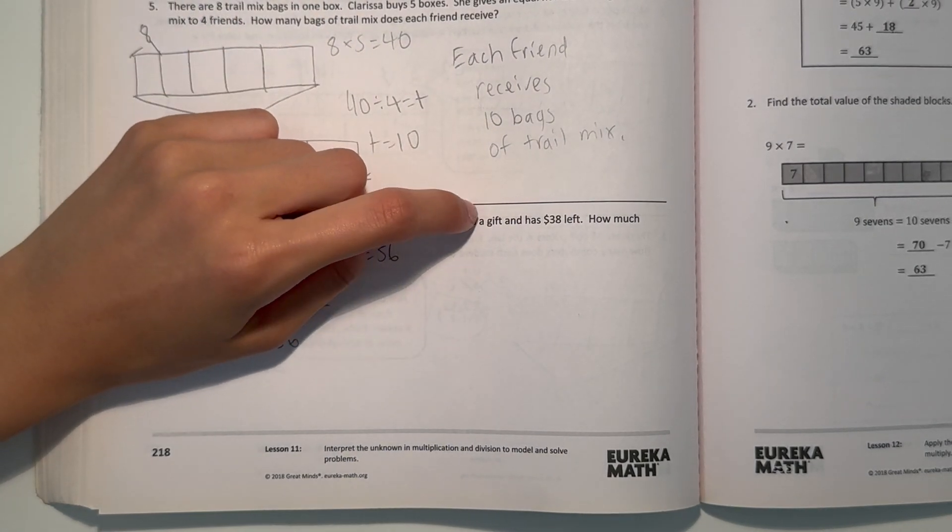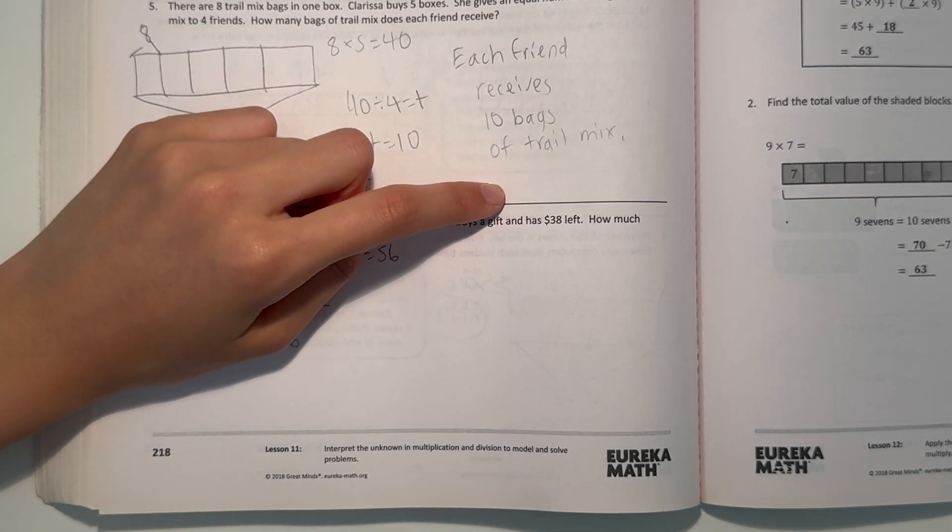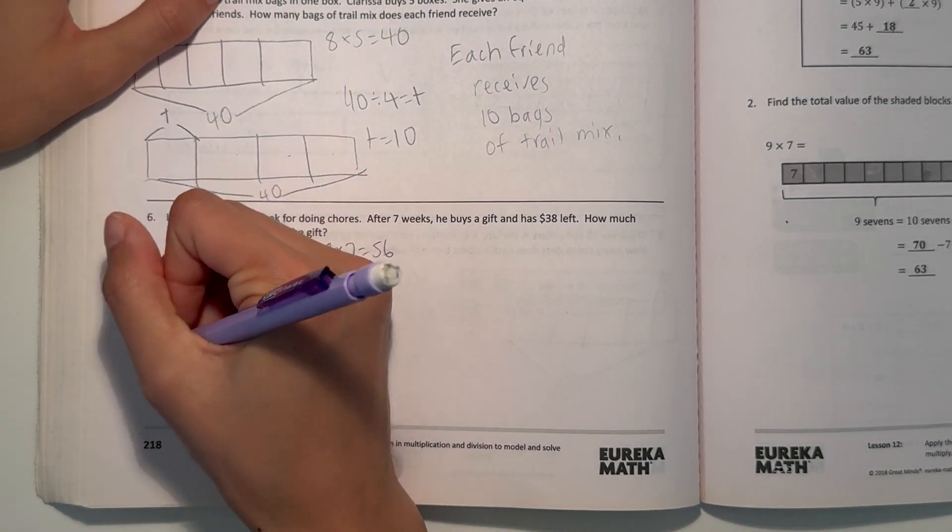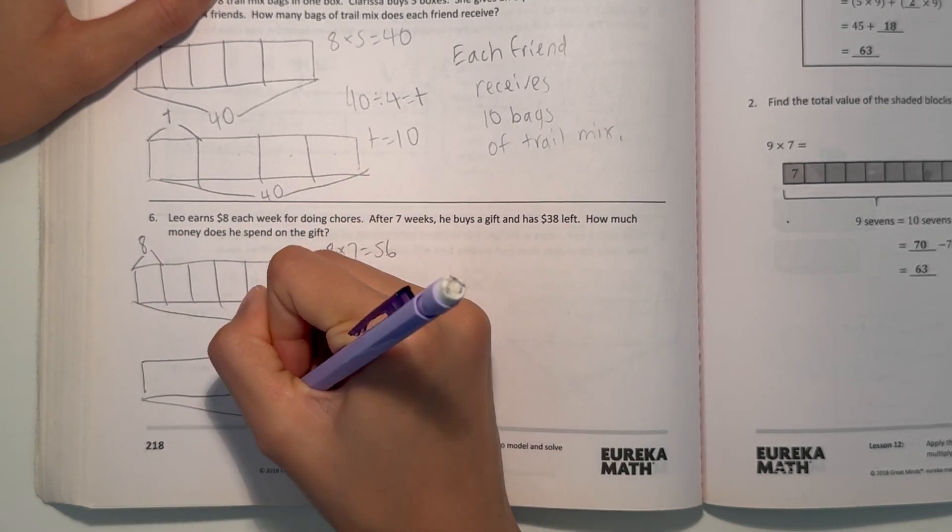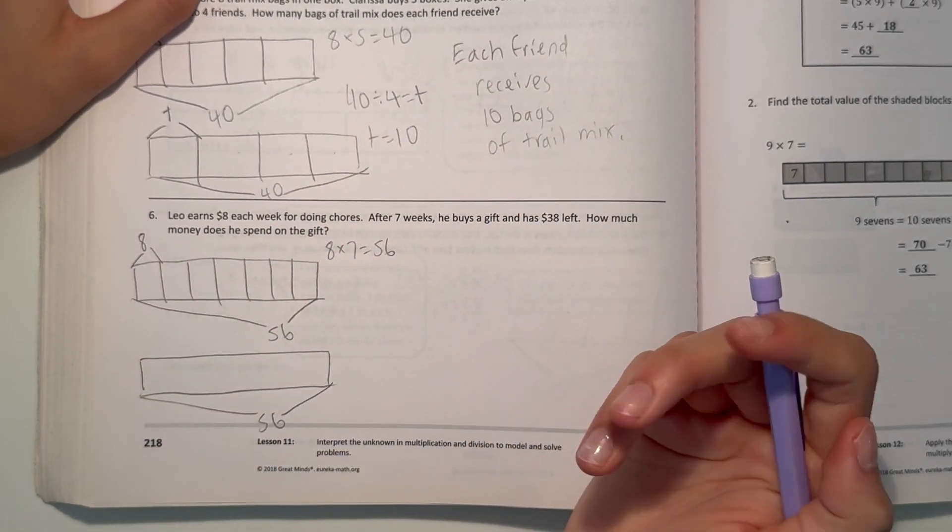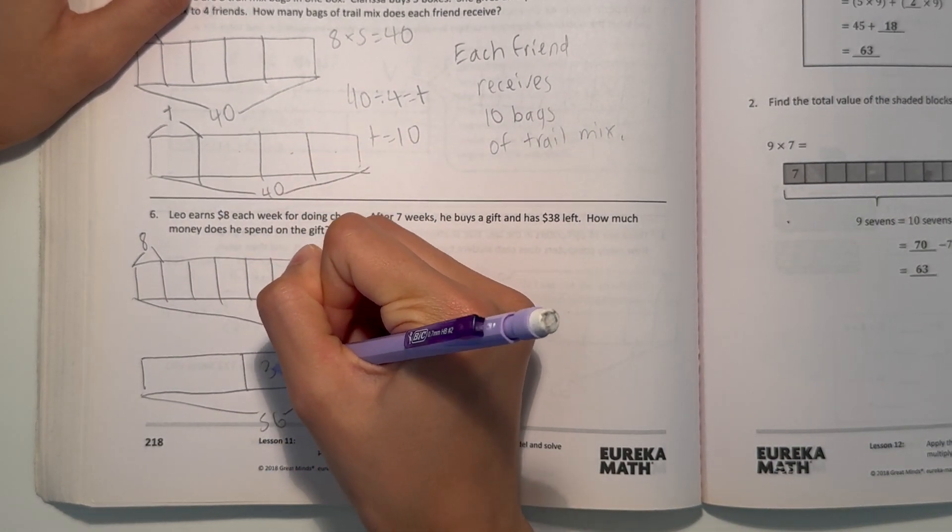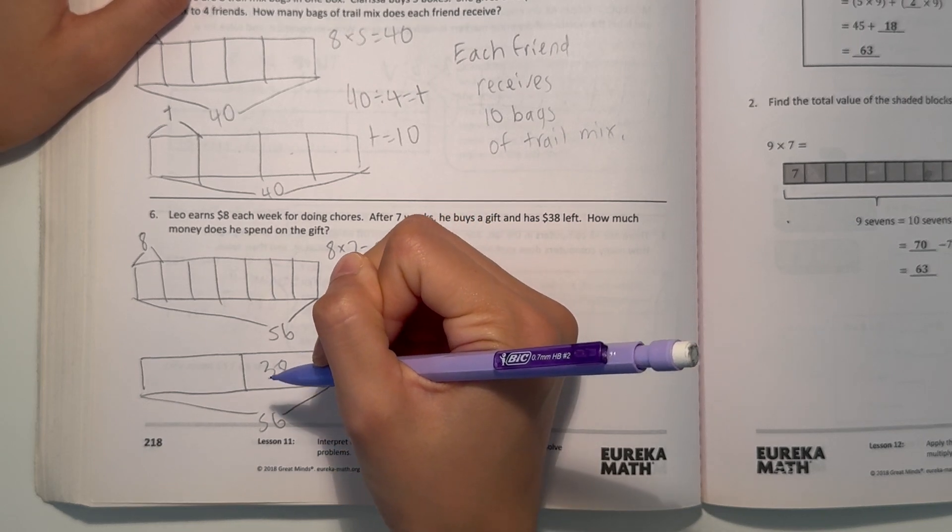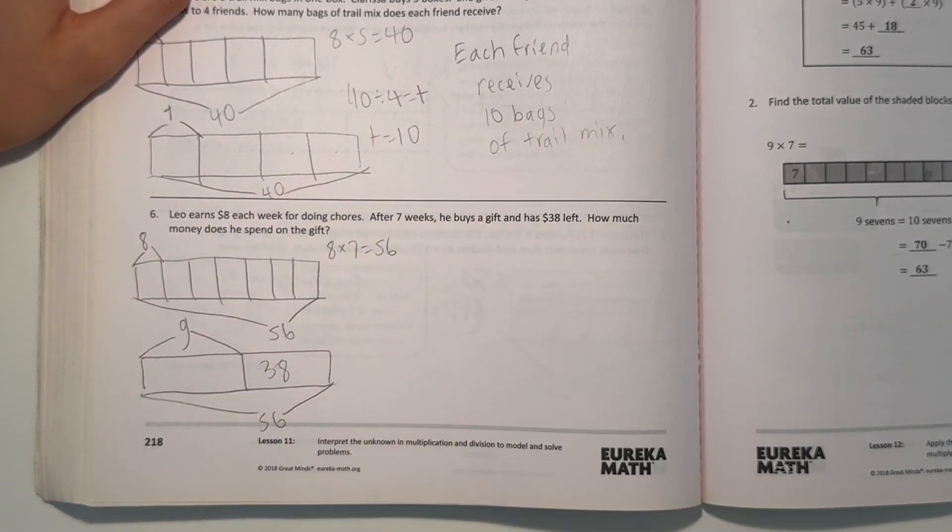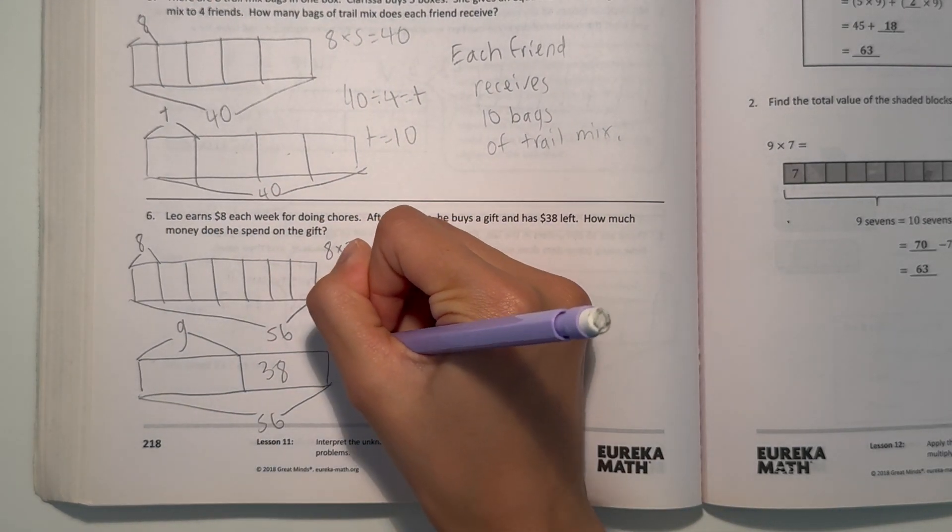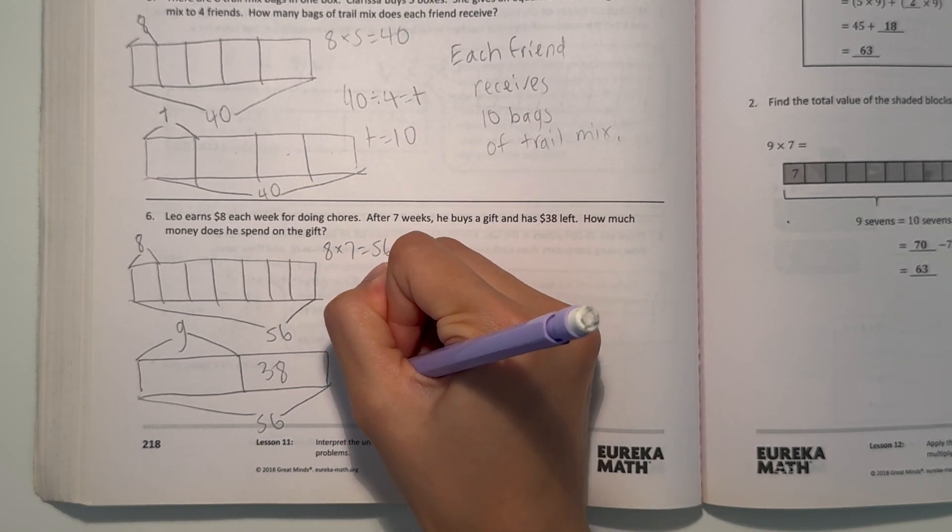But then we know he buys something, and after buying that item, he has $38 left. So we want to find out how much money he spent on the gift. Let's do a tape diagram. Our total is 56. He buys a gift, and after buying that gift, he has $38 left. So how much was the gift? We can do G for gift. 56 minus 38 equals G. So then G equals 18.